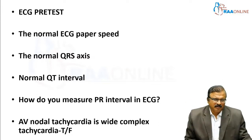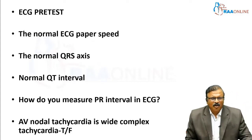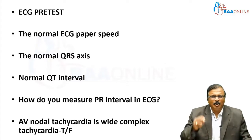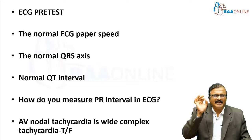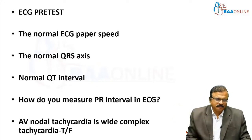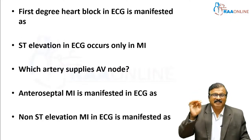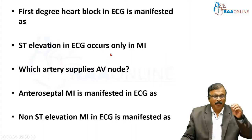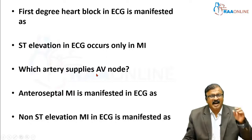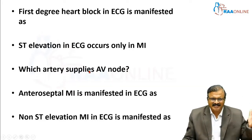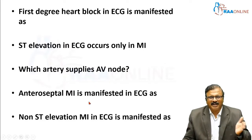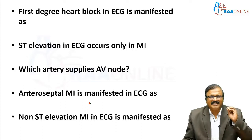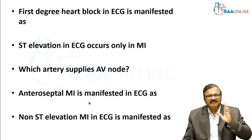What we should know: What is the normal ECG paper speed? What is the normal QRS axis? What is the normal QT interval? How do you measure the PR interval in ECG? Is AV nodal tachycardia a wide complex tachycardia — true or false? How is first degree heart block manifested in ECG? Does ST elevation in ECG occur only in MI, or are there other causes? Which artery supplies the AV node — a must-know question. What is the blood supply of the conduction system — SA node, AV node? Anteroseptal MI is manifested in ECG how? All should know MI and ECG manifestation. How is non-ST elevation MI seen in ECG?